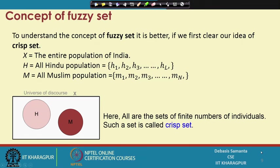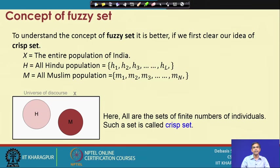In our subsequent lectures we will basically discuss about all these elements one by one. Today we will discuss about the fuzzy elements first. Let us see exactly what fuzzy elements are. Fuzzy elements are essentially a fuzzy set. We can better describe a fuzzy set in the form of a crisp set actually, and we know exactly the concept of set.